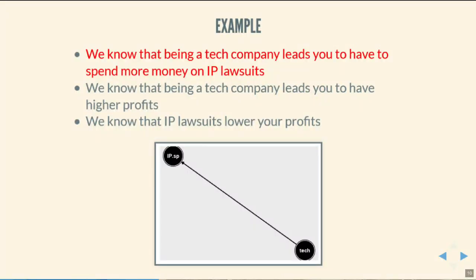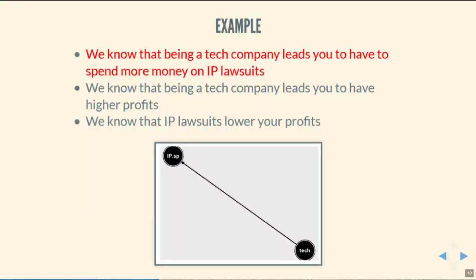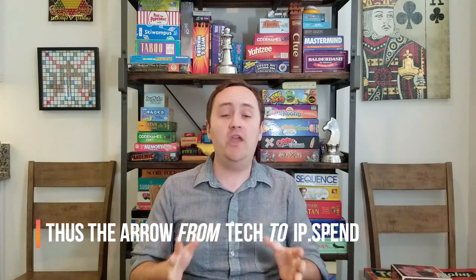Let's write down assumption one: being a tech company has an effect on intellectual property lawsuits. We have two variables — whether you're a tech company, and how much you spend on IP lawsuits. We write down 'tech' with a circle around it, and 'IP spend' with a circle around it. Then we draw an arrow from tech to IP spend. This arrow is itself an assumption — we're assuming being a tech company affects IP spending, and that the causality runs in that direction, not the other way around. It's reasonable to assume IP lawsuits don't cause you to become a tech company.